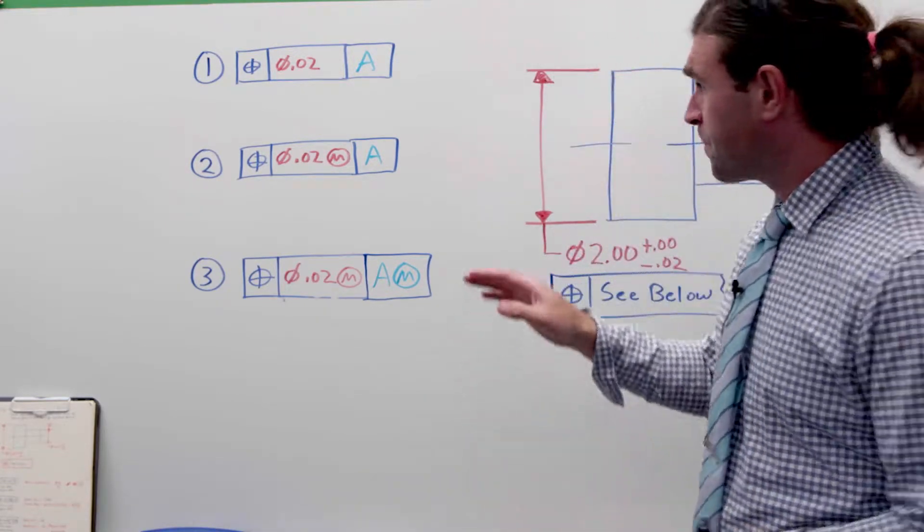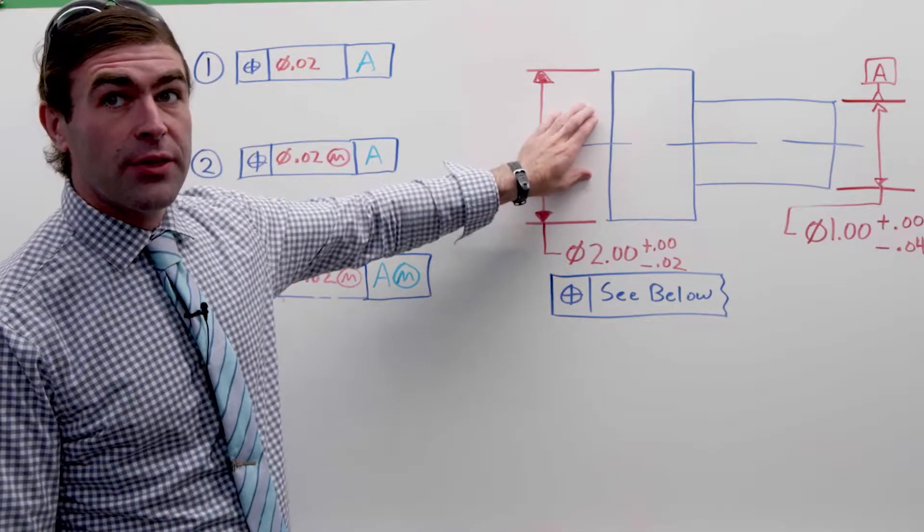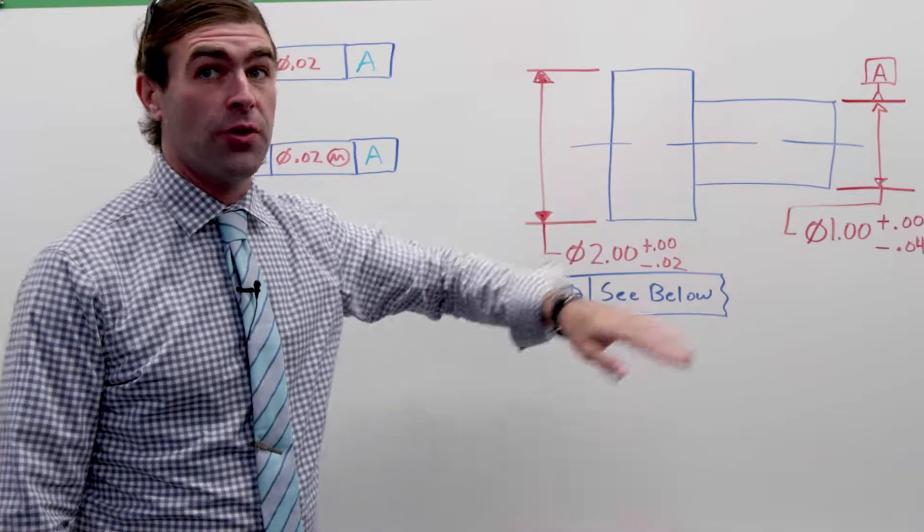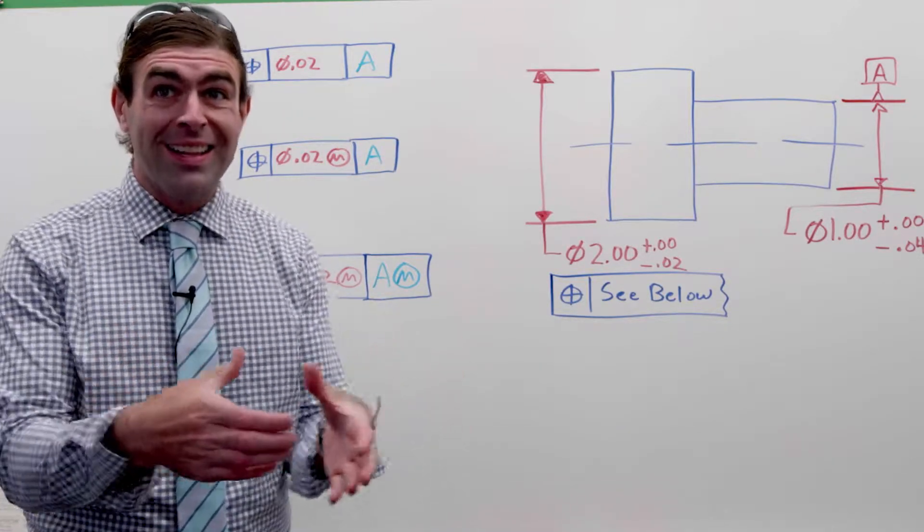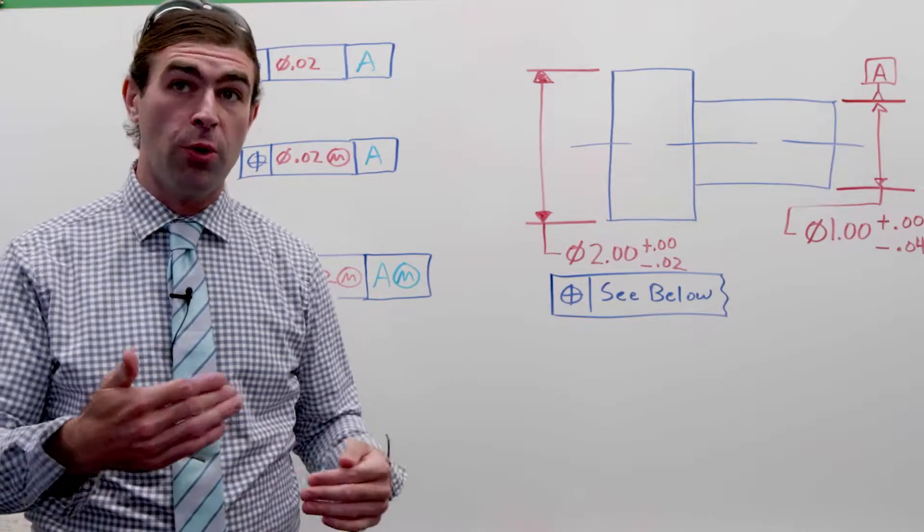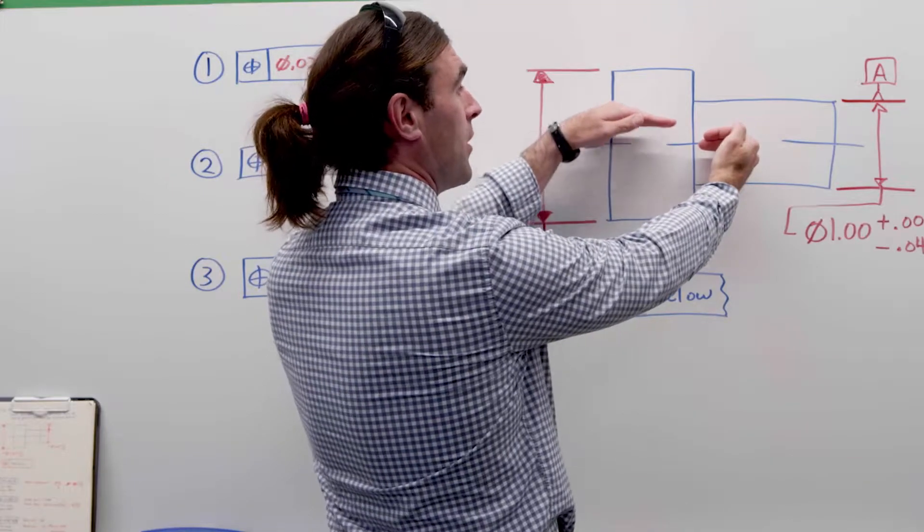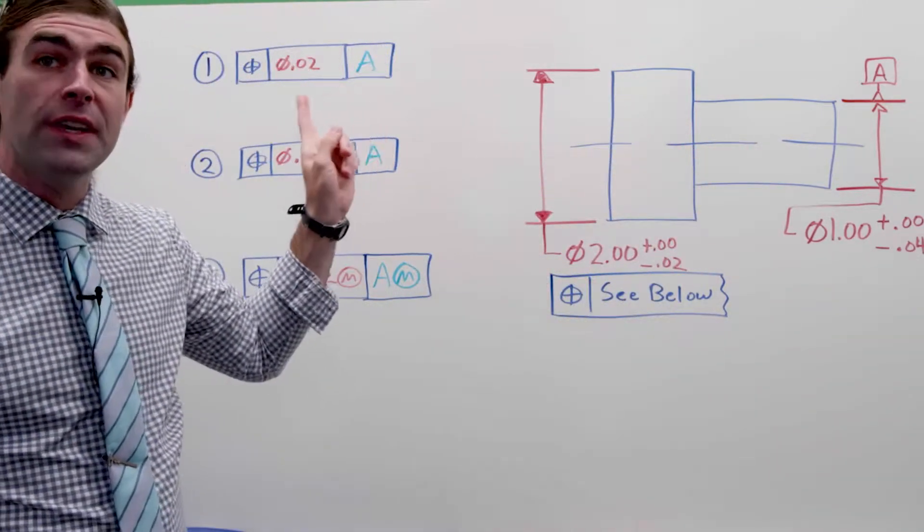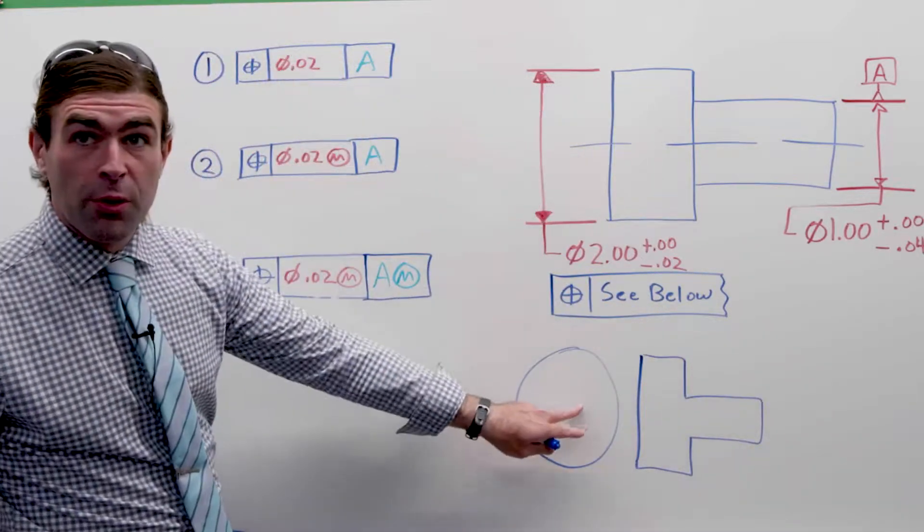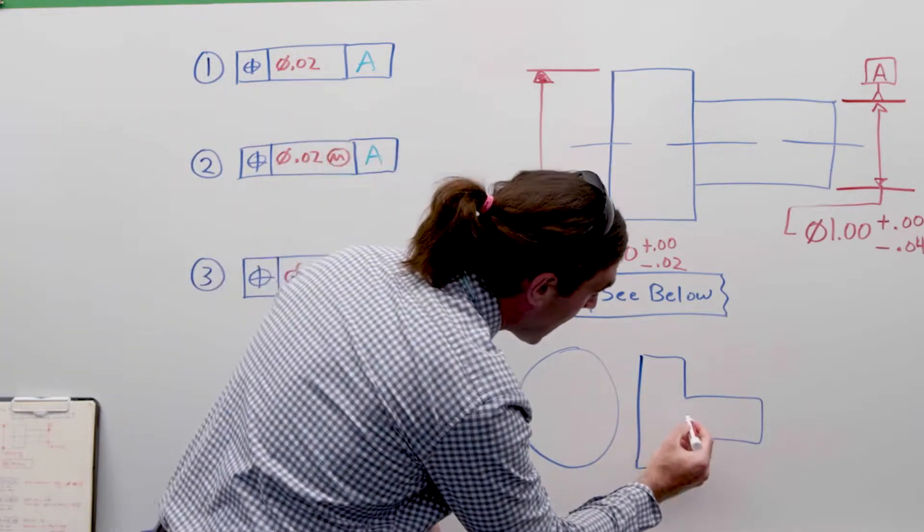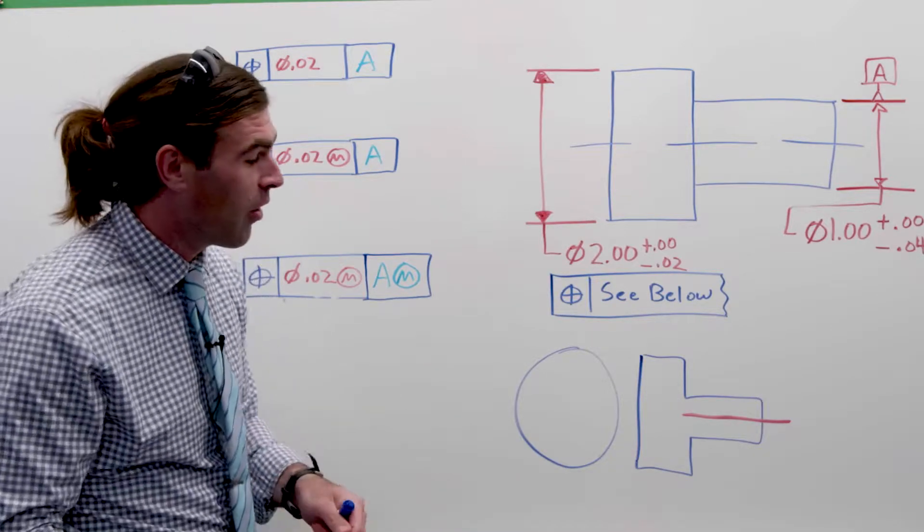So what we're looking for here, we'll start with this first one, is how far the axis of this feature can be from the axis of this feature. Now the datum feature is at RFS, so we're going to clamp it with a collet or a chuck, it's not going anywhere. So we're keeping this fixed, and the only variation can be where the axis of the controlled feature can be.